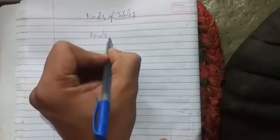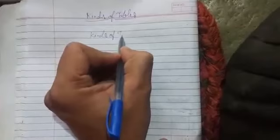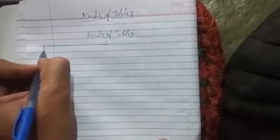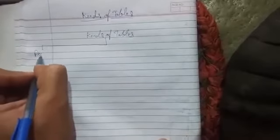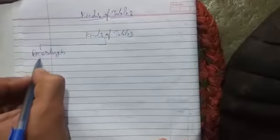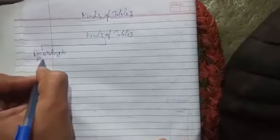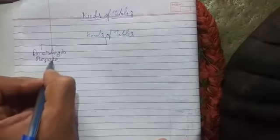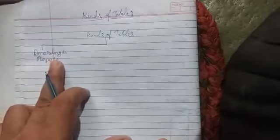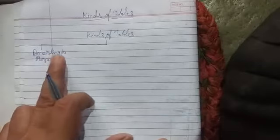The classification of tables can be done on three basis. The first basis is according to purpose — on the basis of what purpose you have created the table. These are called the classification according to purpose.